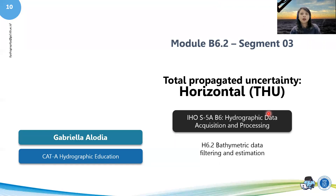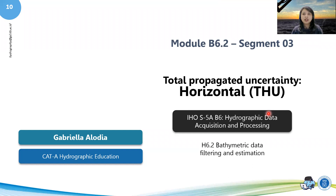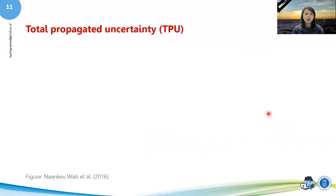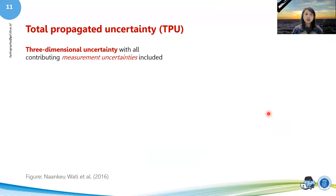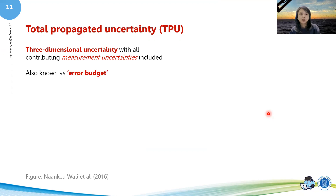Now we are going to talk about the concepts of total propagated uncertainty, focusing on the horizontal uncertainty, or THU. TPU is actually a three-dimensional uncertainty with all contributing measurement uncertainties included. Sometimes we can call TPU an error budget, because basically what we're trying to do with TPU is budget our errors.